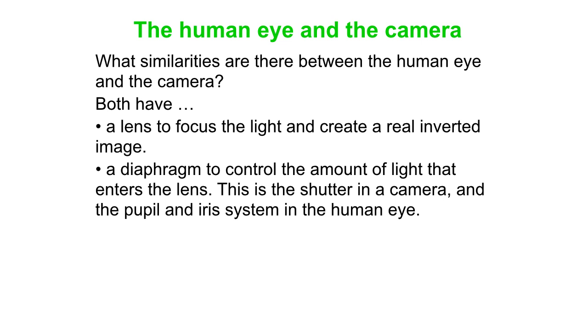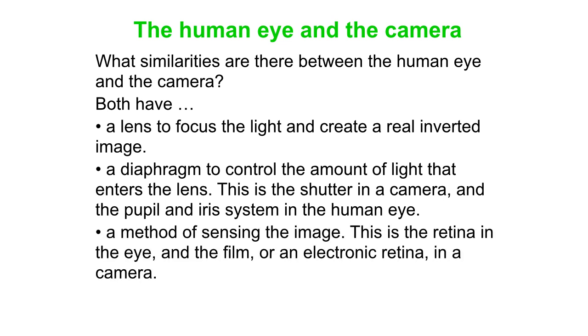And then that light, which does get focused to a nice real inverted image, well you have to have some method of sensing the image. And that's what the retina is used for in the eye. And in old style cameras we used film. In modern cameras we have essentially an electronic retina. So that's a good way to think about how it works.